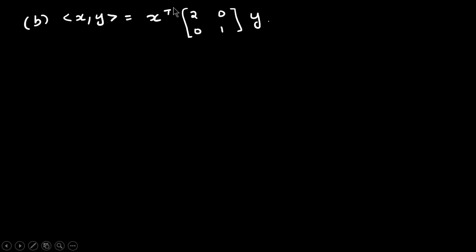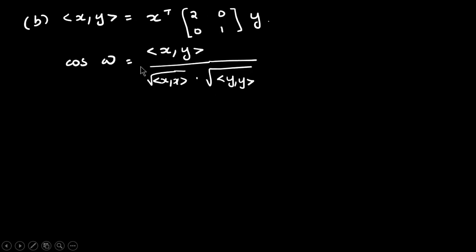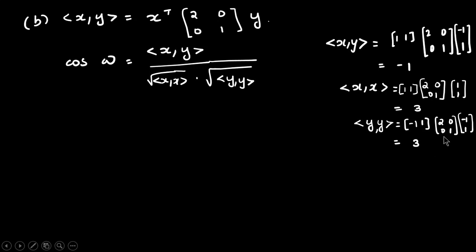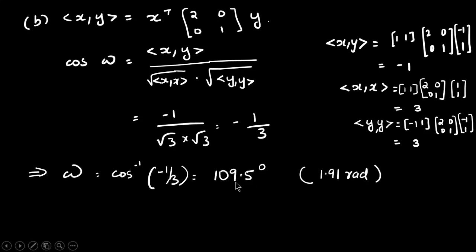Now take a different inner product of the form x transpose A y, where A = [[2, 0], [0, 1]]. Then the inner product of x and y equals x transpose A y, which gives -1. The inner product of x with itself gives 3, and the inner product of y with itself also gives 3. So cosine omega equals -1 divided by root 3 times root 3, which is -1/3. Then omega is approximately 109.5 degrees, or 1.91 radians.